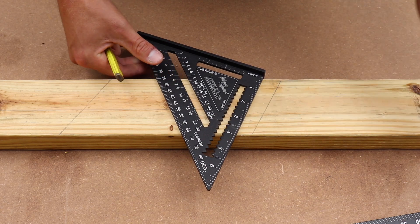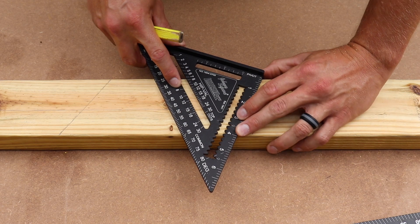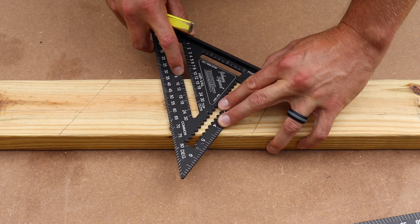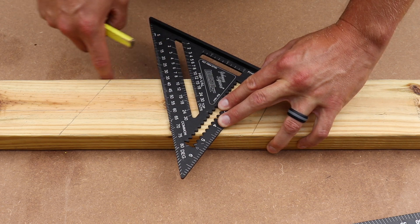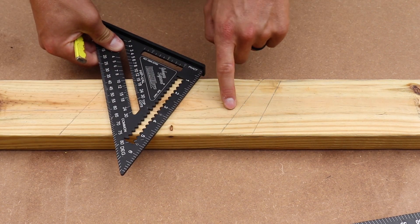If you wanted to do an 8/12, it's the same idea. You find your 8, get your pivot point where you need it to be, rotate that out to where that hash mark for the 8 is parallel with the edge of this board, and you mark on this side. That's an 8/12 pitch.